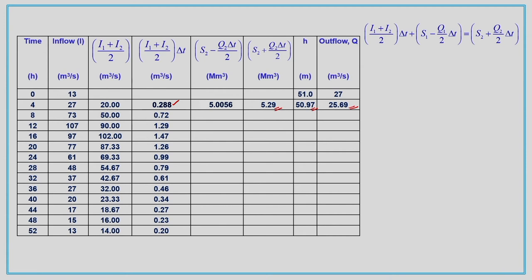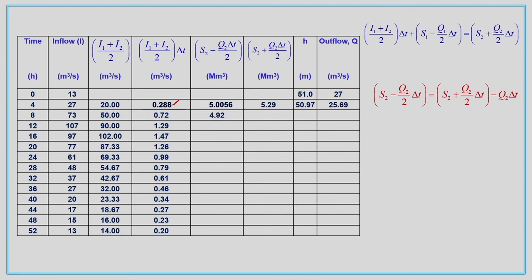S2 − Q2·ΔT/2 is obtained from S2 + Q2·ΔT/2 by subtracting Q2·ΔT. With S2+Q2·ΔT/2 = 5.29 and the new Q2 = 25.69 m³/s, we subtract Q2·ΔT (for 4-hour ΔT) to get 4.92 million meter cube. Then adding 0.72 and 4.92 gives the next indicative storage of 5.64 for the following time step.